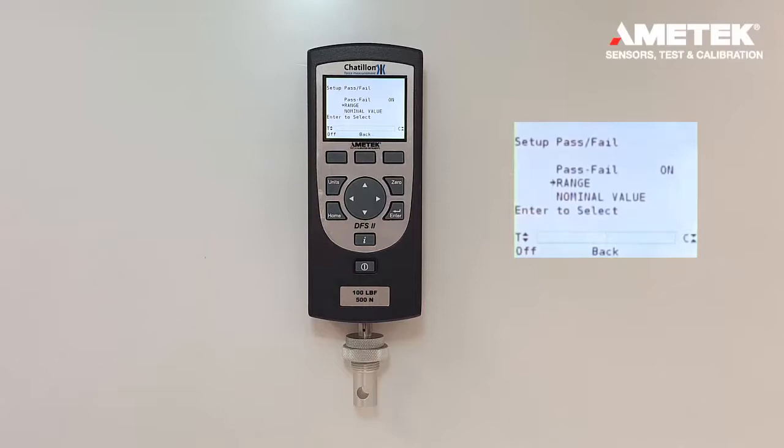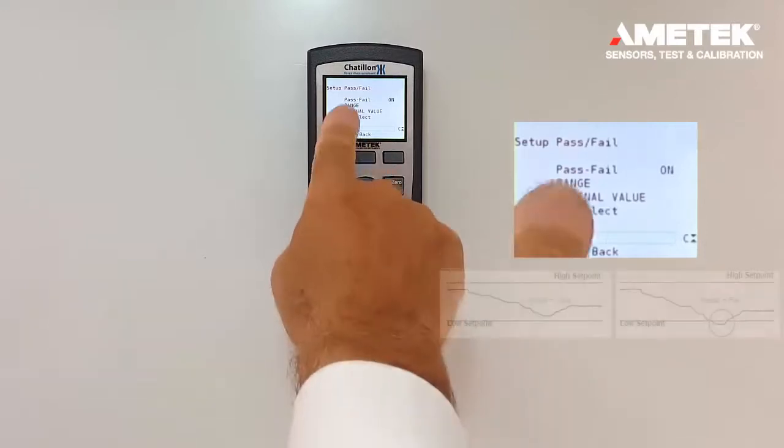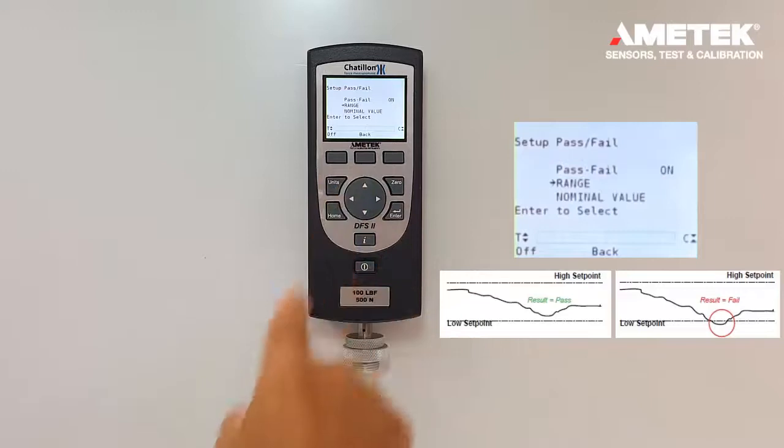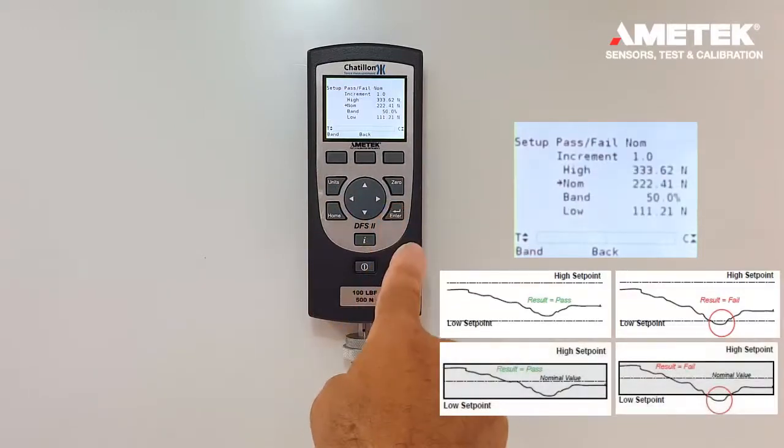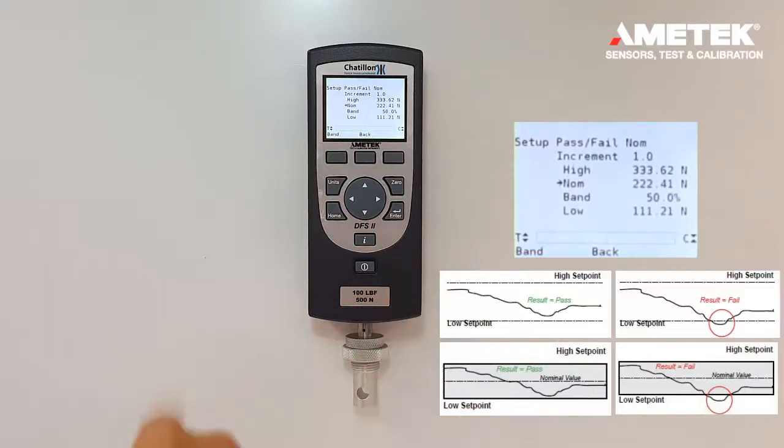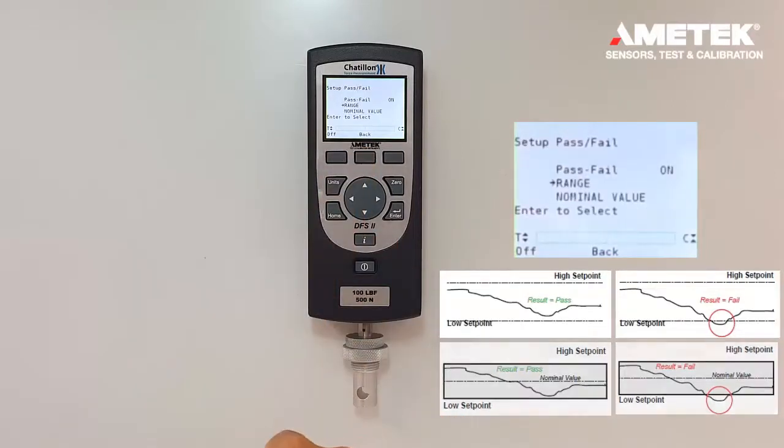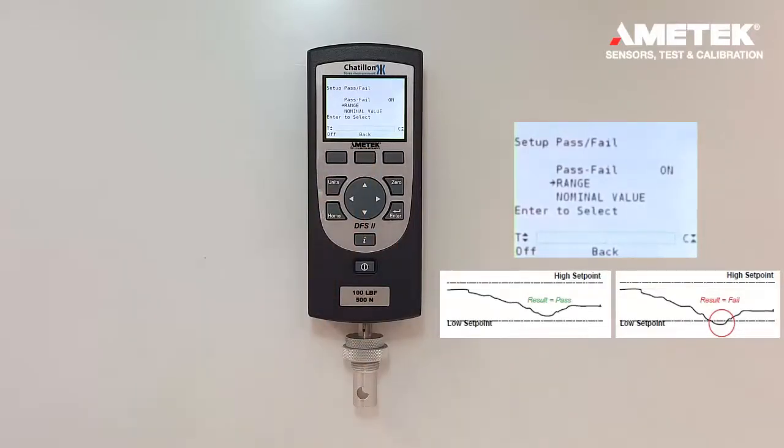Now there are two possible settings for pass and fail. We can select by determining an upper and lower range, or we can select a nominal value with a percentage band plus or minus high and low. So right now we are going to start with selecting a range. Let's determine a range for the pass and fail functionality.